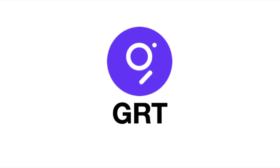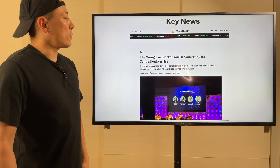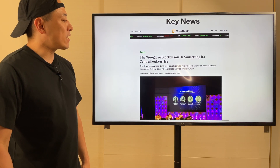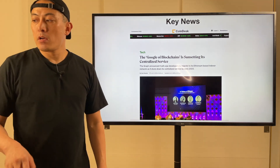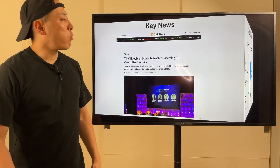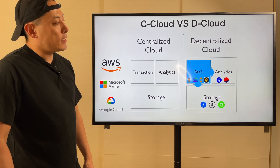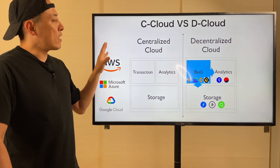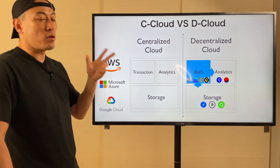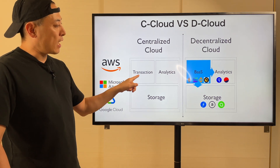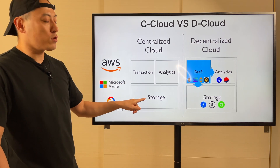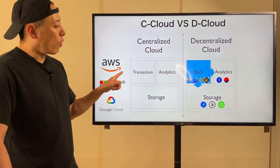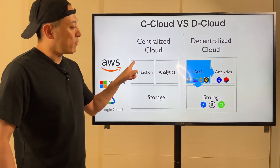GRT — The Graph. Key news updates. The goal of blockchain is decentralized services. So to help you understand the point, it's a review item — what's a graph? Looking at the centralized cloud, they have mainly three components: transaction system, on-chain system, and storage system. AWS, Microsoft Azure, Google Cloud — all these players have these three components.